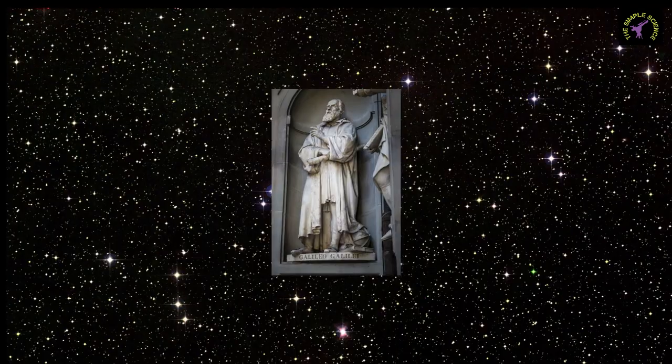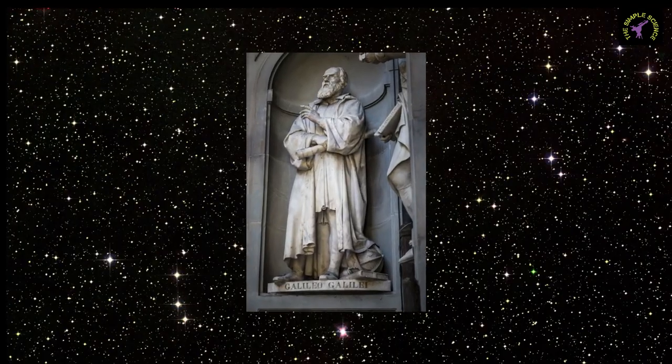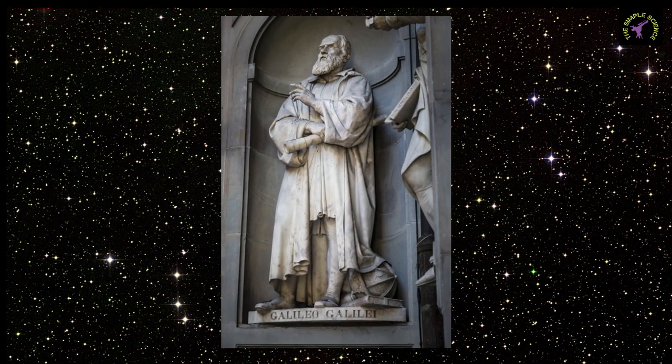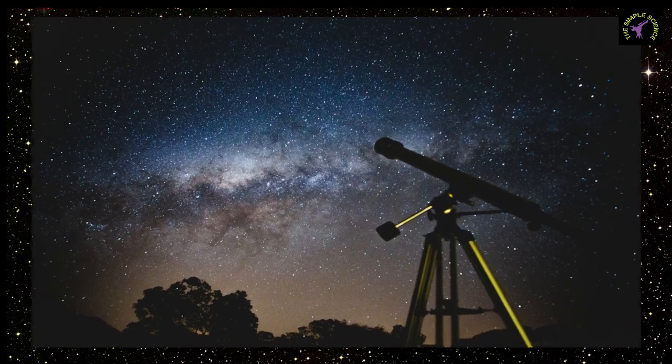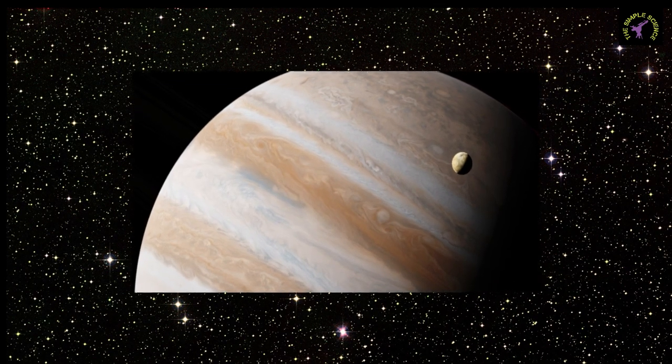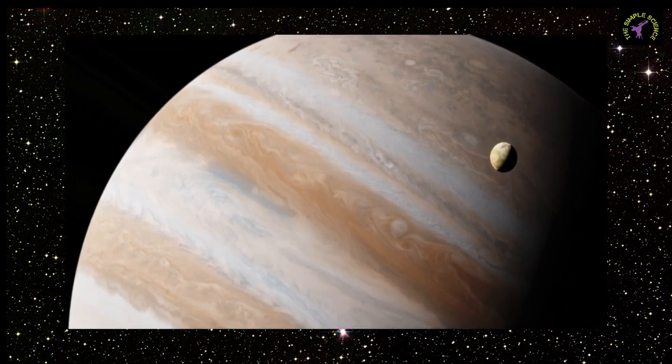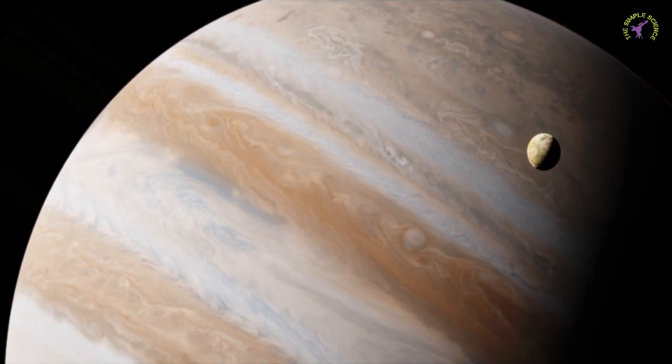In 1609, Galileo made a telescope and started observing the sky. When he looked at the planet Jupiter, he found that it was accompanied by several small satellites or moons that orbited around it. This implied that everything did not have to orbit directly around Earth.